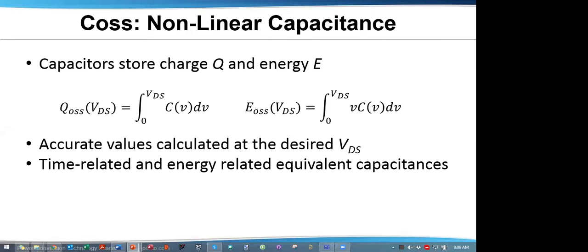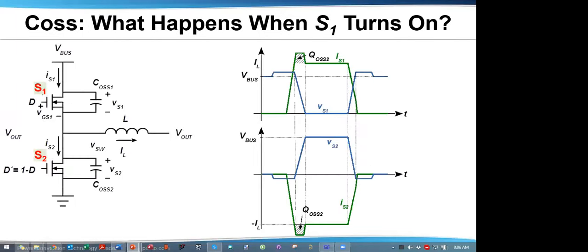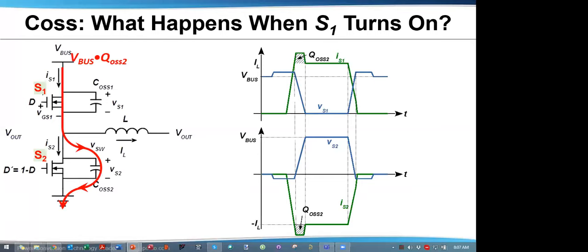Now we can compute the time-related energy and energy-related equivalent capacitance by asking: what capacitance would I need to get a particular QOSS? And what capacitance would I need to get a particular EOSS? These capacitor values are not identical unless the capacitor is linear. Let's take a look at COSS capacitance when S1 turns on. The top set of waveforms is for the high-side switch S1; the bottom set is for the low-side switch S2. When we turn on S1, we discharge the energy in the top switch — EOSS1 — but at the same time the switch node voltage is rising, charging COSS2.